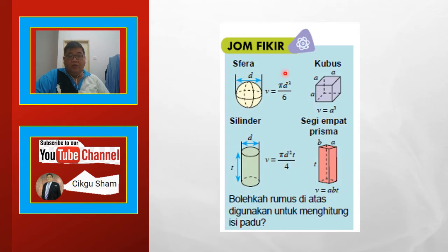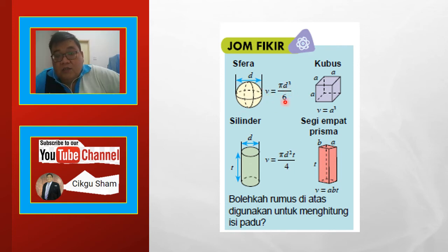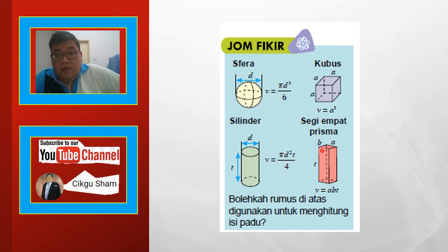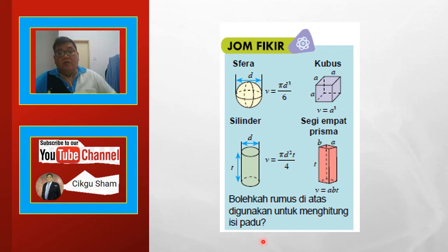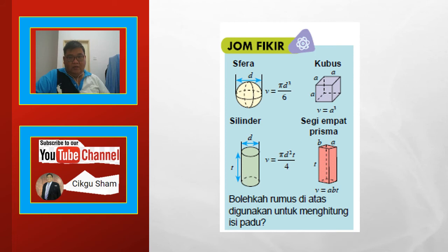Jom fikir: sfera — V sama dengan πd³ bagi 6. Kubus — V sama dengan a³. Selinder — V sama dengan πd²t per 4. Prisma — kita ada V sama dengan abt. Bolehkah rumus di atas digunakan untuk menghitung isi padu? Fikir-fikir.